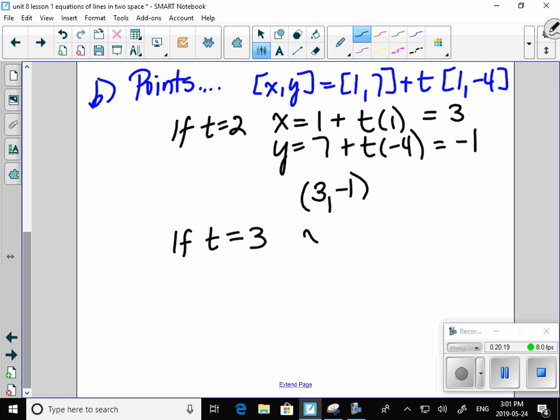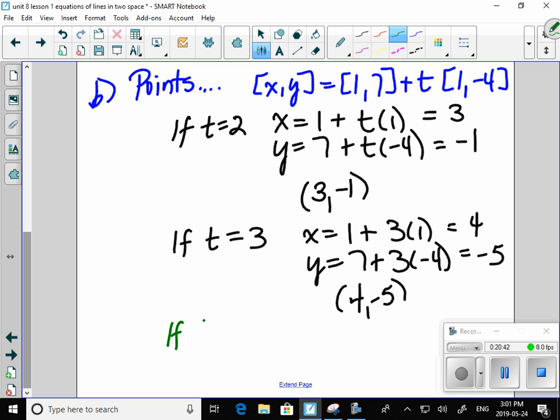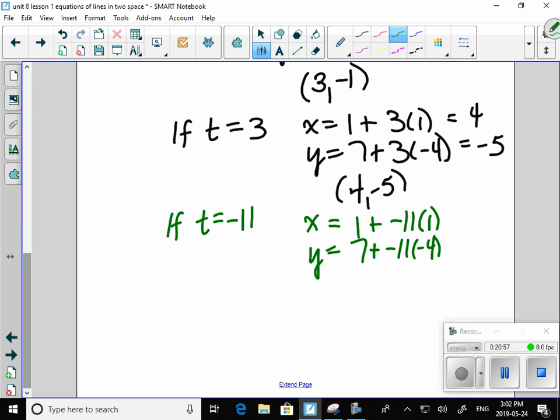And, lastly, you can make t whatever you want. Let's let t equal negative 11. Because why not? So, I have 1 plus negative 11 times 1. 7 plus negative 11 times negative 4. I would have points, negative 10 and positive 44, 51. Negative 10 comma 51 is also a point on that line.